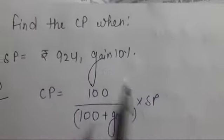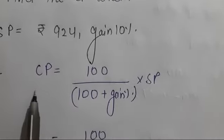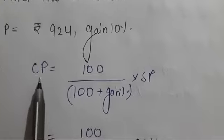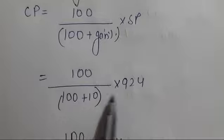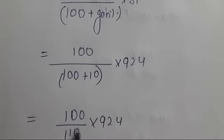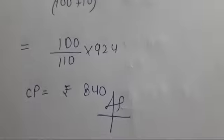Next question number 3. Find the CP when SP is 924 and gain percent is 10 percent. CP equals 100 upon (100 plus gain percent) times SP. This gives 100 upon 110 times 924. CP equals 840.